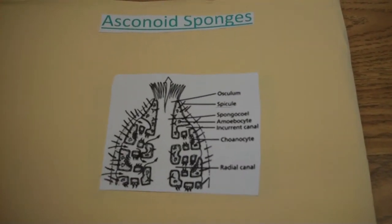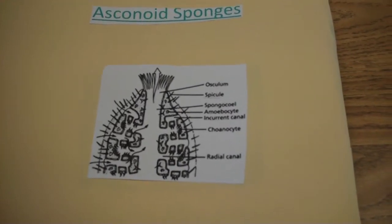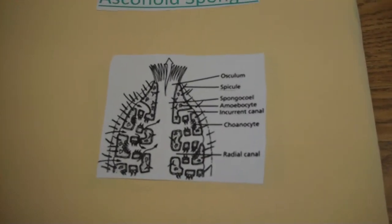This is a diagram of an asconoid sponge. It has an osculum, which is where it leads to help the sponge eat. This is part of the digestive system.